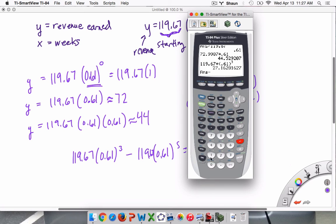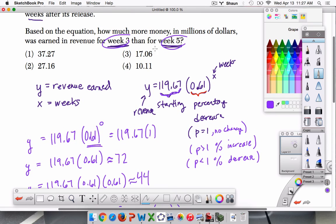And then subtract 119.67 times 0.61 to the fifth power. Hit the carrot button to the fifth power. Hit enter. And we get about $17 million. So we're losing $17 million in that period. Or as they have here, $17.06 million. All right. Thanks.